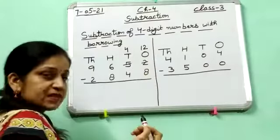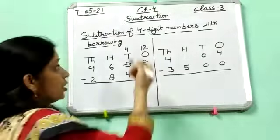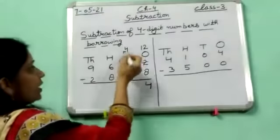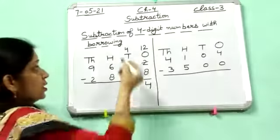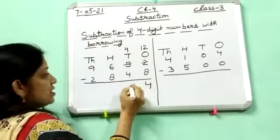Now we easily subtract 8 from 12. 12 minus 8 is 4. Here it remains 4. Now 4 minus 4 is 0.